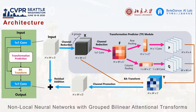There are two key procedures in the BAT block: namely the transformation predictor and BA transform respectively. The former reads input X and predicts P and Q conditioned on X. The latter applies attentional operations on X.